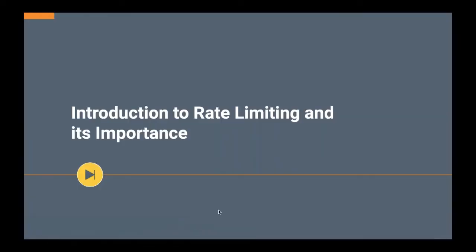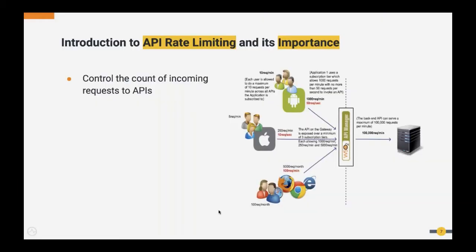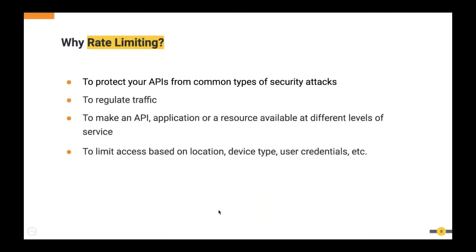Now let's move to today's session with an introduction to rate limiting and its importance. Rate limiting is used to monitor incoming and outgoing traffic to or from a network. For example, if you are using the API of a particular service configured to allow 100 requests per minute, an error will be triggered if the number of requests exceeds that. Rate limiting policies can be at different levels such as application level, API level, resource level, and so on.